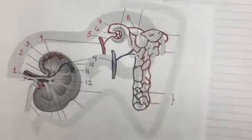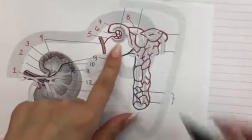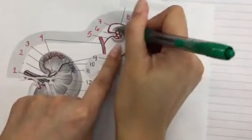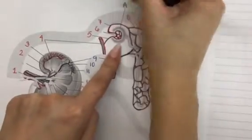All right, so for the flow of urine, we're going to start with where urine is made, which is this little claw-shaped thing right here. I'm going to use the alphabet this time instead of numbering them, so we're going to start with the letter A.